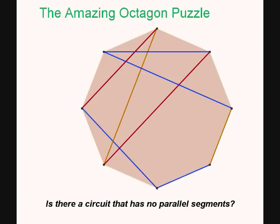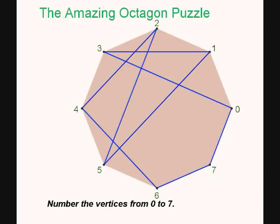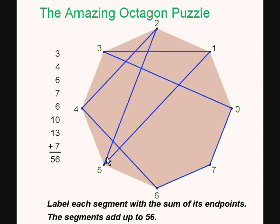The first step is to number the vertices from 0 to 7. Now, we also want to attach labels to these segments. So, each segment is going to get a number that's the sum of its endpoints. So, the segment from 0 to 3 becomes 3. The segment from 3 to 1 is labeled 4. The segment from 1 to 5 is labeled 6. And so on. We get 3, 4, 6, 7, 6, 10, 13, and 7. These add up to 56 in this case.